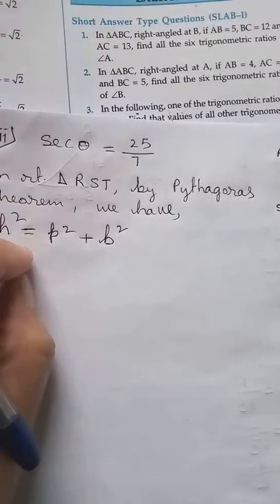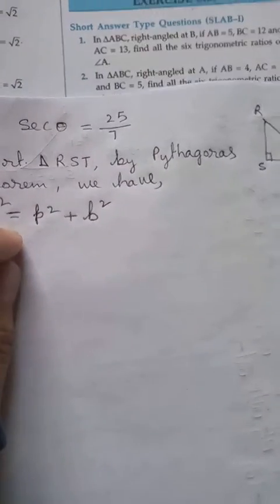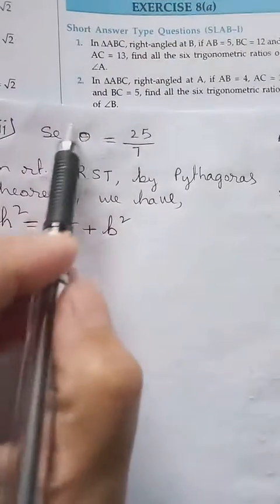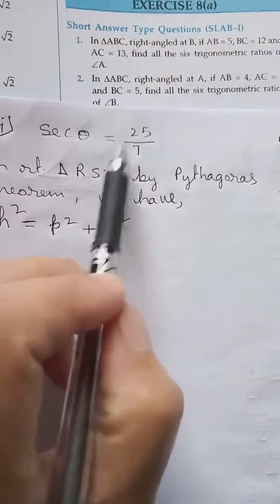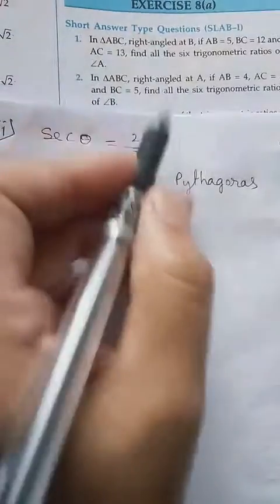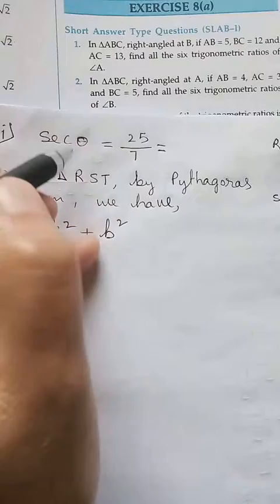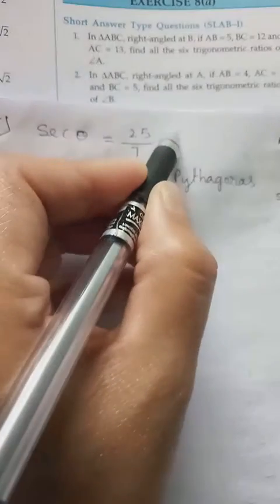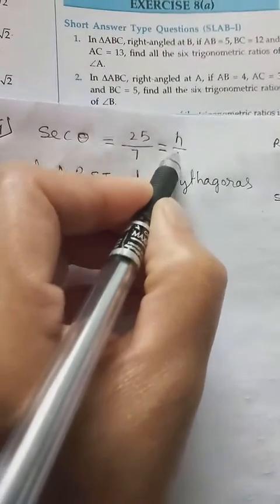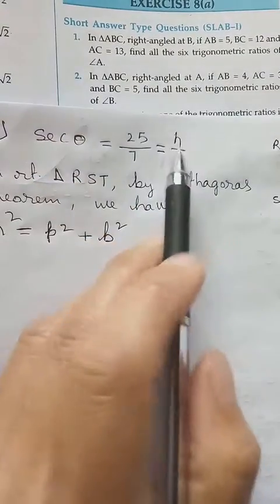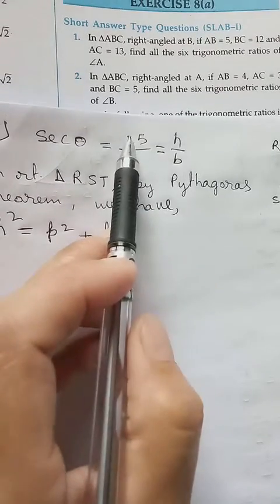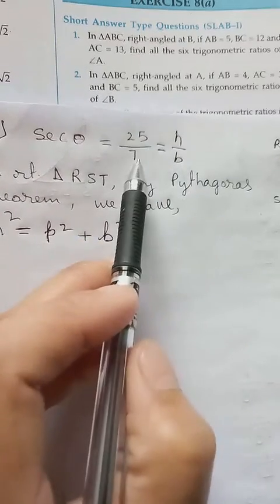So let's start from what we know and proceed to the unknown. Here we have sec θ equals 25 by 7. So I hope you remember the definition of sec θ is the opposite of cos, so that means it will be H by B. So if we compare here, H will be 25, B will be 7.